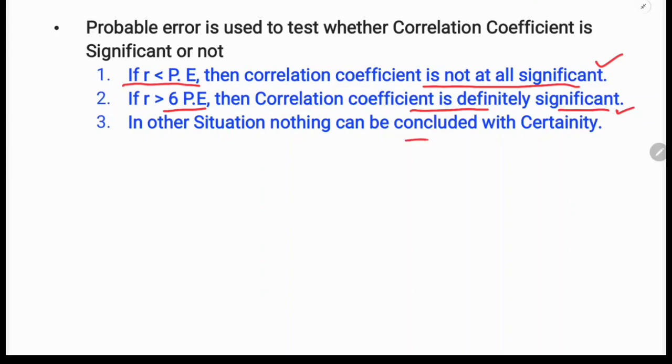In other situations, nothing can be concluded with certainty. If they are equal, or if r is five times, three times, or two times the probable error, we cannot say whether the correlation coefficient is reliable or not.